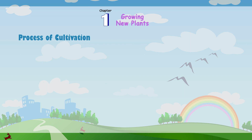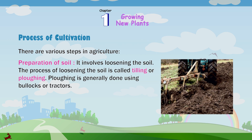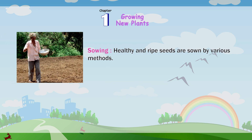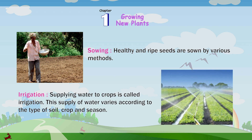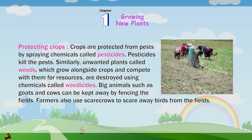Process of cultivation. There are various steps in agriculture. Preparation of soil involves loosening the soil. The process of loosening the soil is called tilling or plowing. Plowing is generally done using bullocks or tractors. Sowing: healthy and ripe seeds are sown by various methods. Irrigation: supplying water to crops is called irrigation. This supply of water varies according to the type of soil, crop and season. Adding manure and fertilizer: manure or fertilizers are added to the soil to increase its fertility. Manure is obtained from plant and animal wastes, whereas fertilizers are chemicals made in factories.